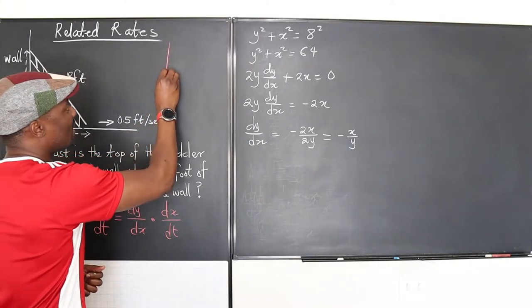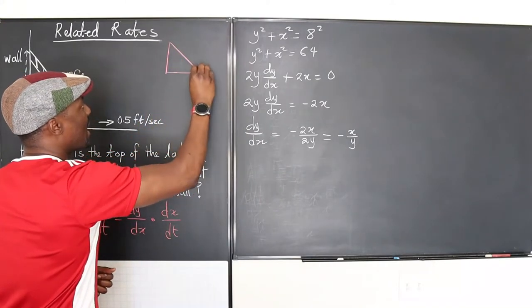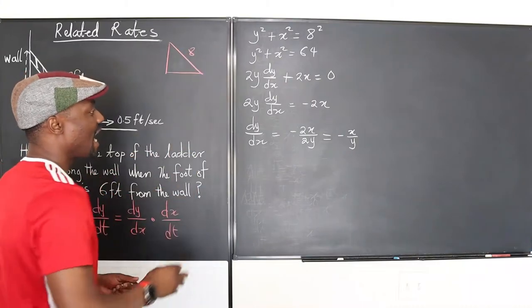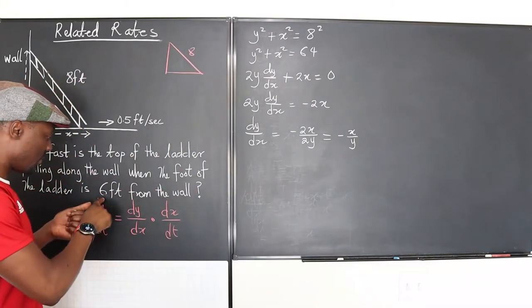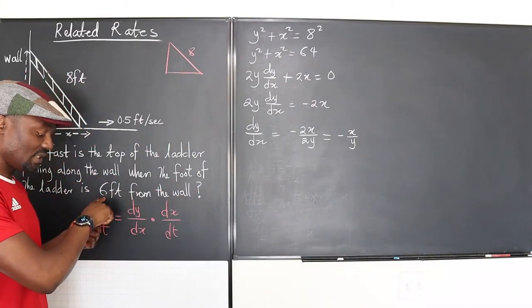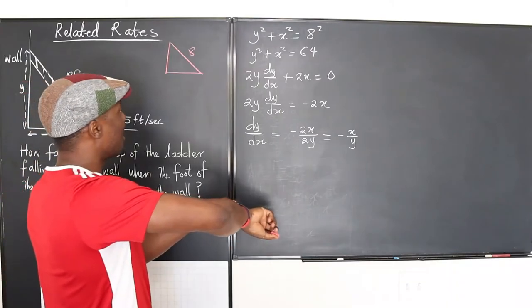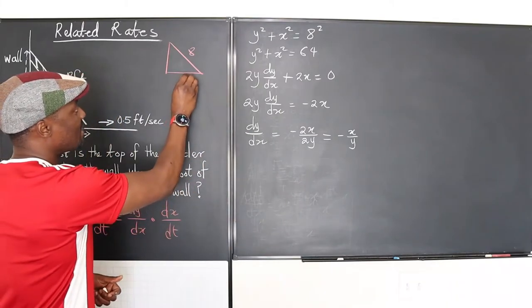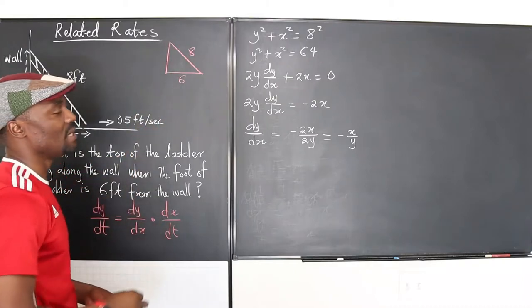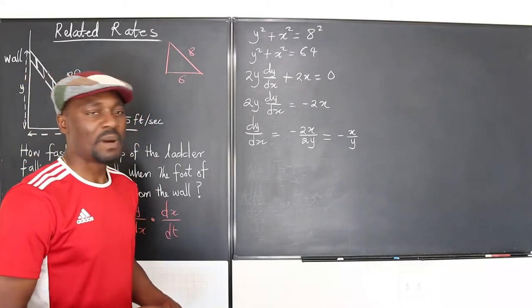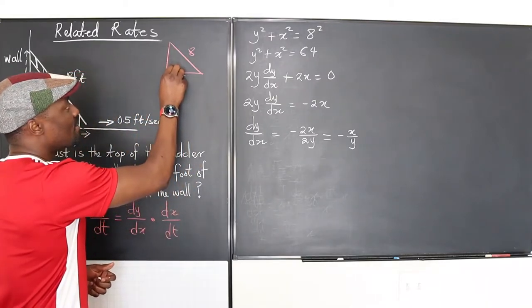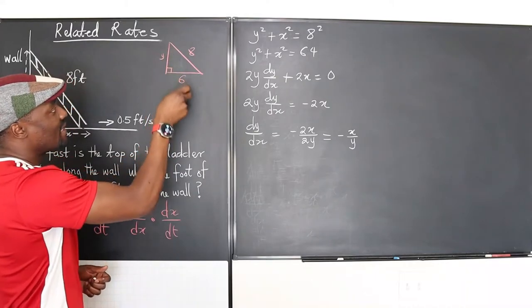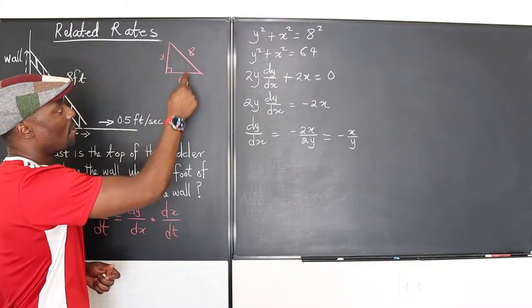Let's say you have a right triangle, and this is 8, and we are told from the question that x has to be 6. So if x is 6, this is going to be 6. What will y be?